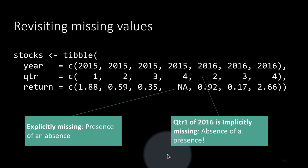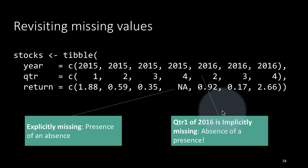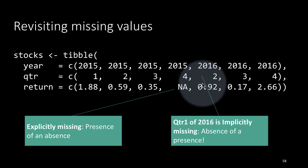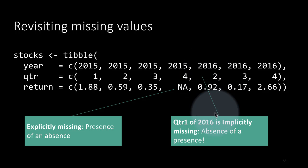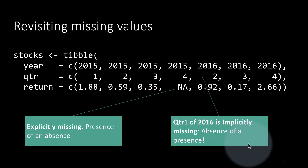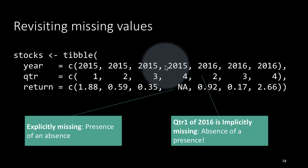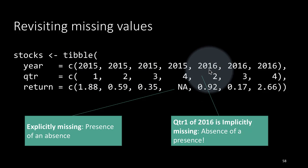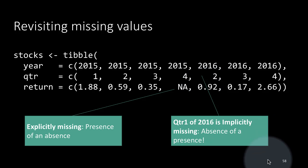That is an implicitly missing value. We could call it the absence of a presence. The first quarter for 2016 is just not there. Both of these are missing values. This is clearly a missing value because it explicitly says so. This is an implicitly missing value. We know that it's missing only because the first quarter of 2016 is simply absent from the data.